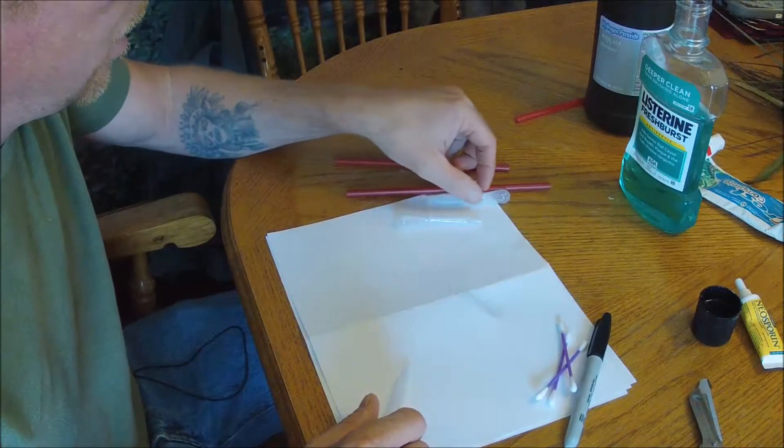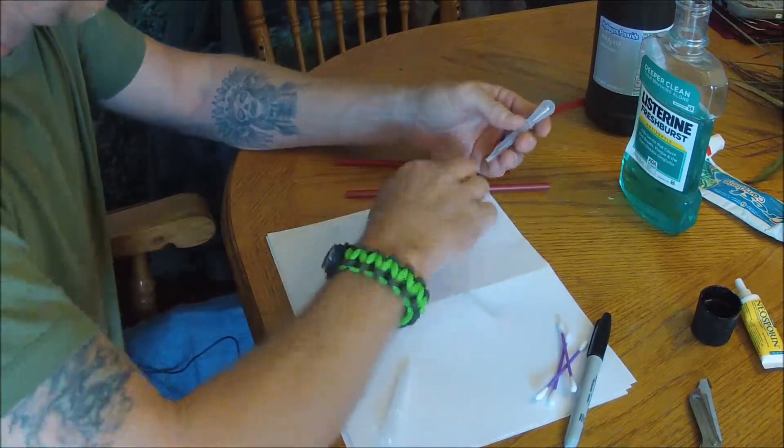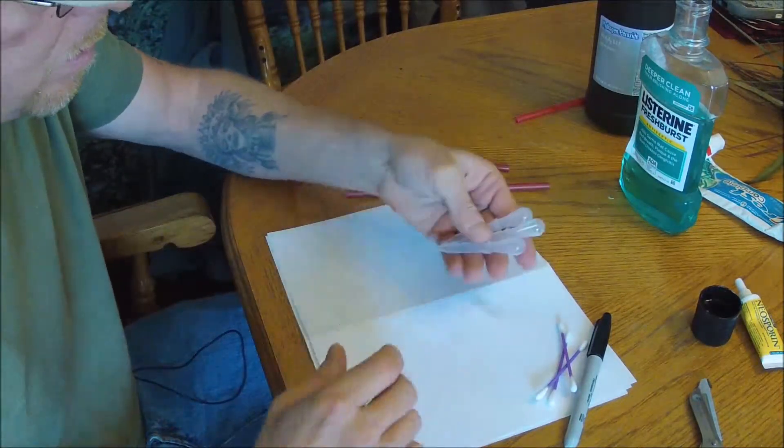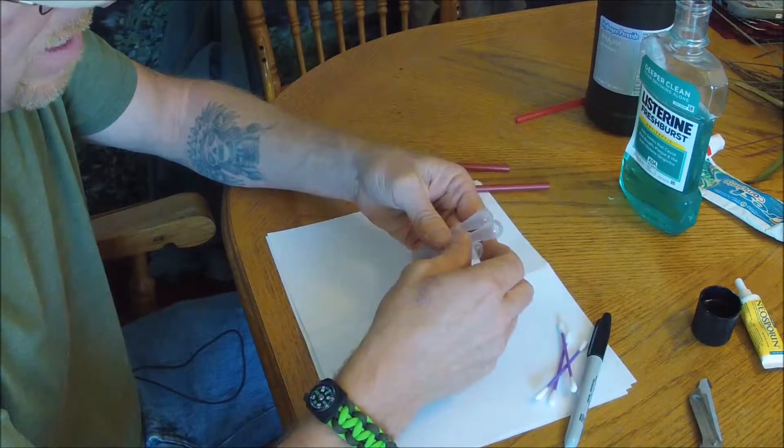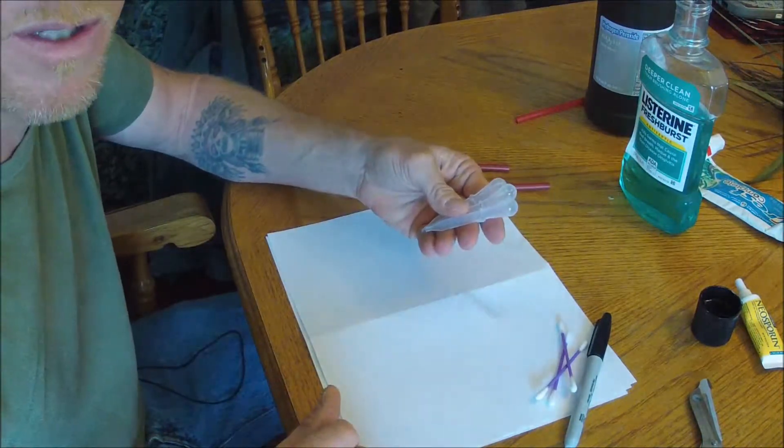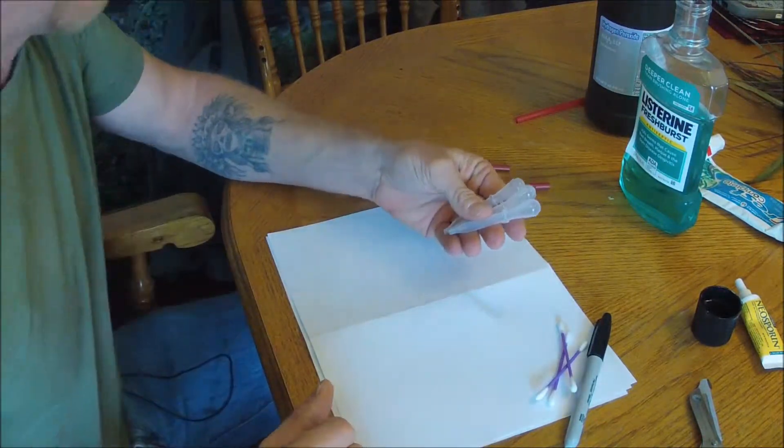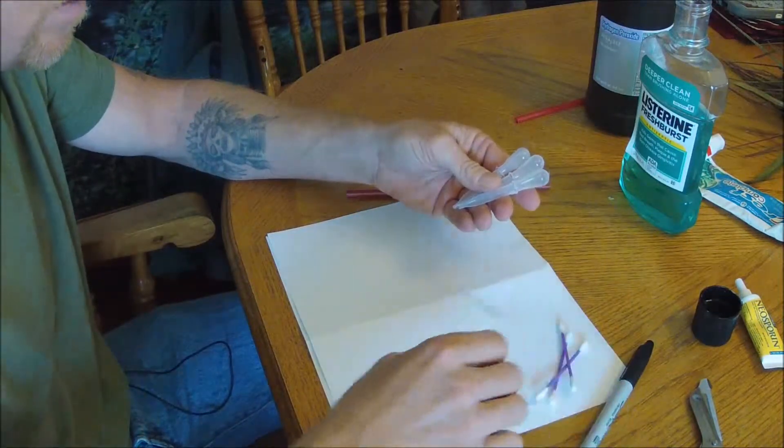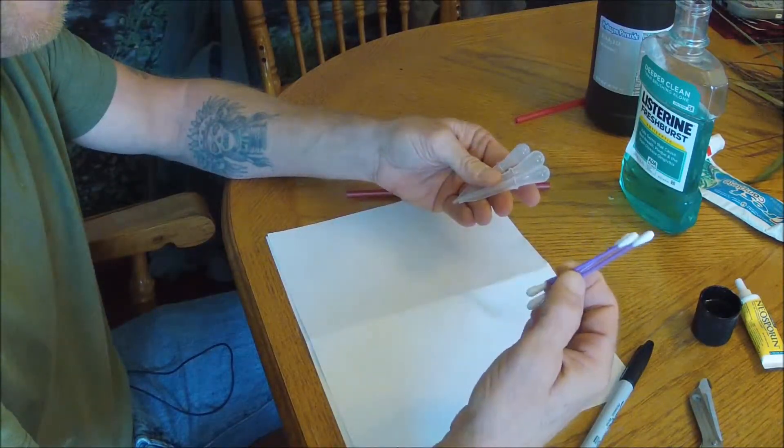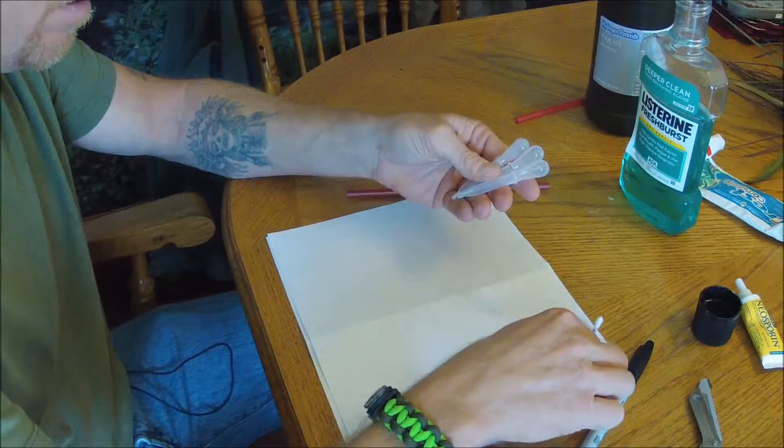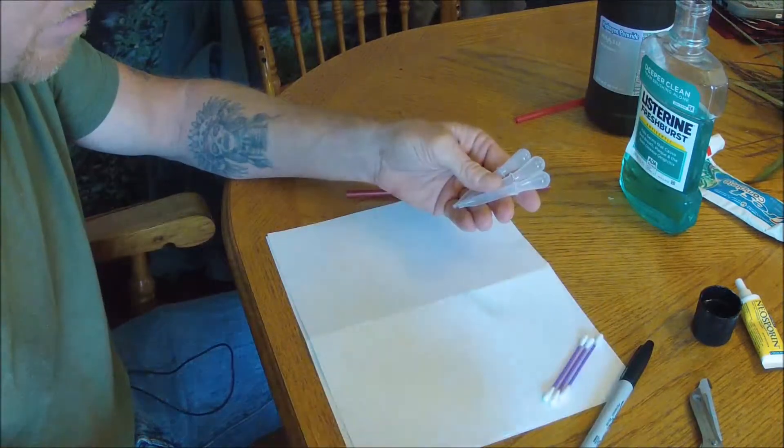The materials that I have here are disposable eyedroppers. I got these for like five bucks for a hundred of them on Amazon. They're great for survival stuff. I've got a sharpie to mark things with, I've got some cotton swabs, whatever you want to call them.